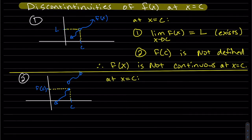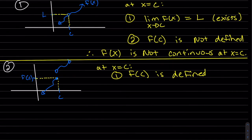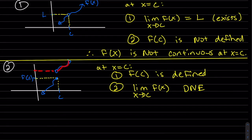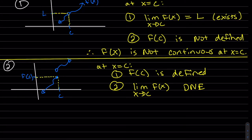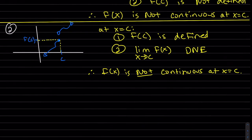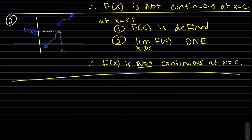Here we have f of c is defined, but the limit is DNE. It's DNE because the left limit does not equal the right limit. So therefore, it's not continuous at c.